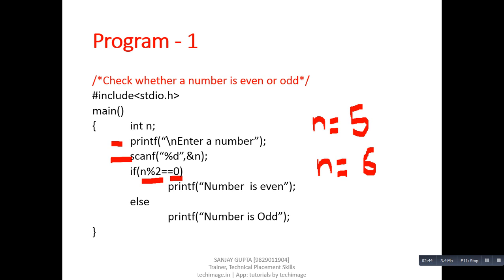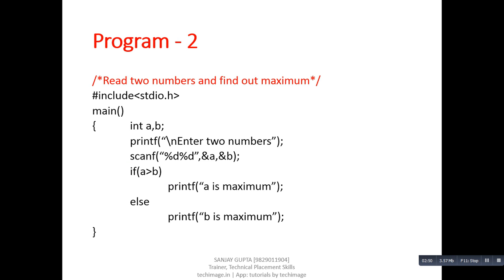Let's take a look at another program which reads two numbers and finds the maximum. In this program, scanf is going to read two numbers inside a and b. Here, if and else statements are comparing values of these variables, a and b. If a is greater than b, then the message 'a is maximum' will be printed on console.